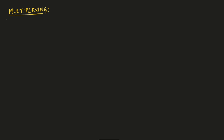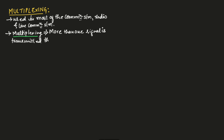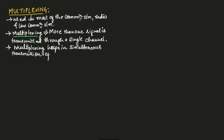Multiplexing is the technique used in most communication systems — radio communication and line communication. In multiplexing, more than one signal is transmitted through a single channel. Therefore, we can say multiplexing helps in simultaneous transmission of multiple messages over a single channel.